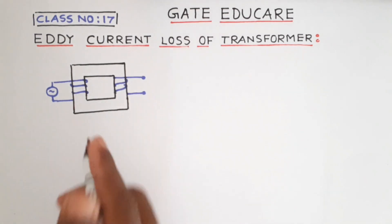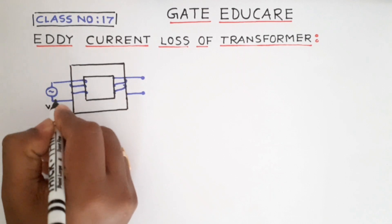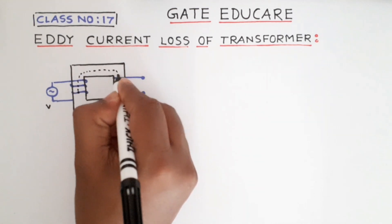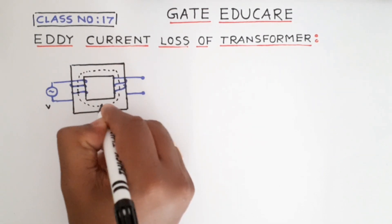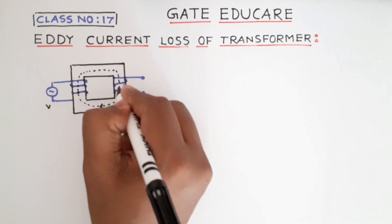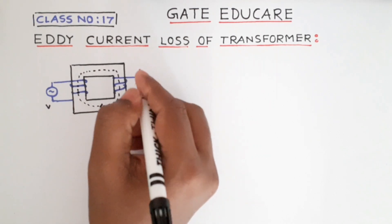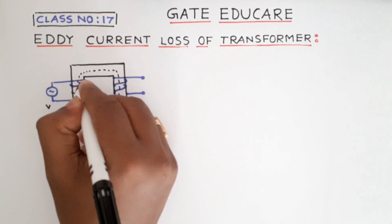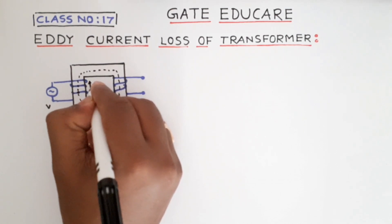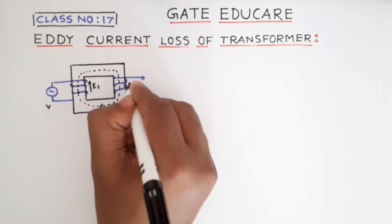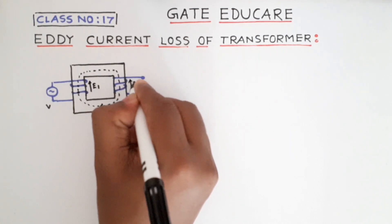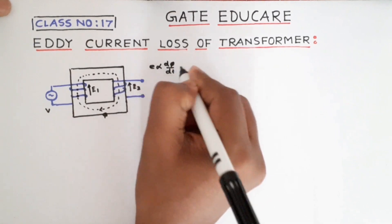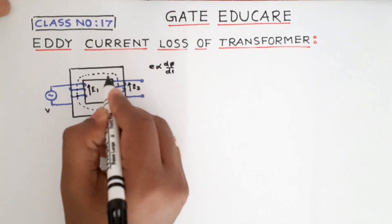First, let us understand what eddy current is. In a transformer, whenever we apply an AC voltage to the primary, an alternating flux is produced which passes through the transformer core and links with both the primary and secondary windings. According to Faraday's law of electromagnetic induction, there is a rate of change of flux (dΦ/dt) in both windings, and also throughout the transformer core itself.